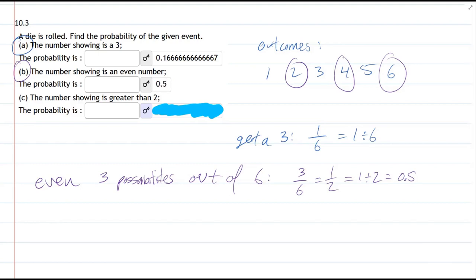And then last part, part C, greater than two. All right, so how many numbers are greater than two that we could roll?